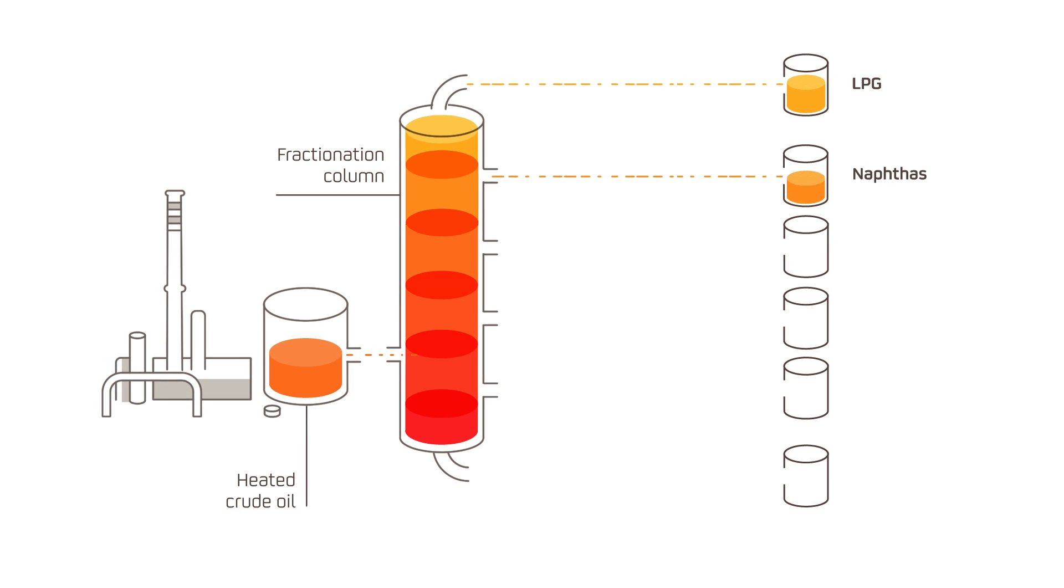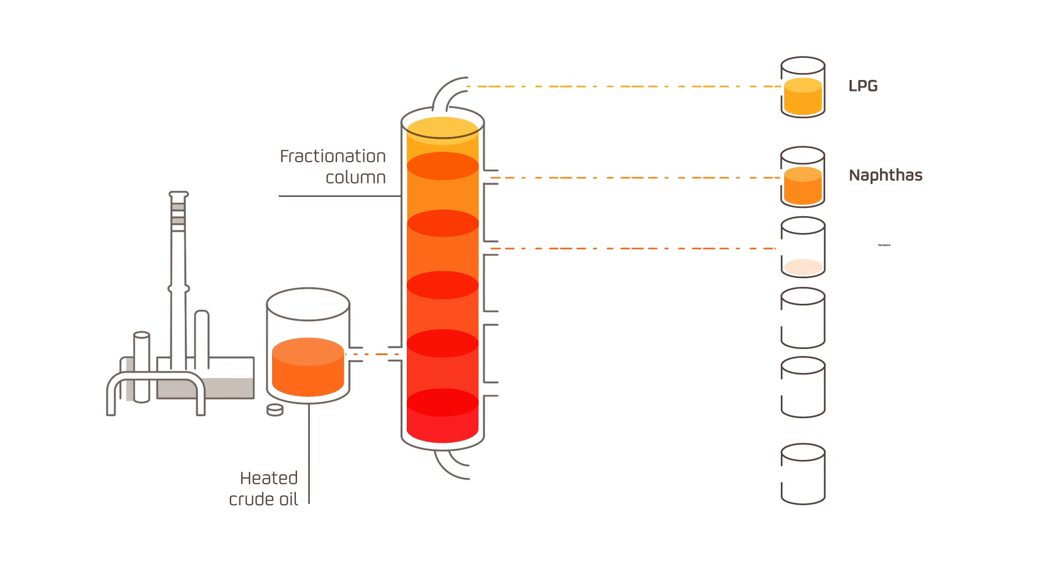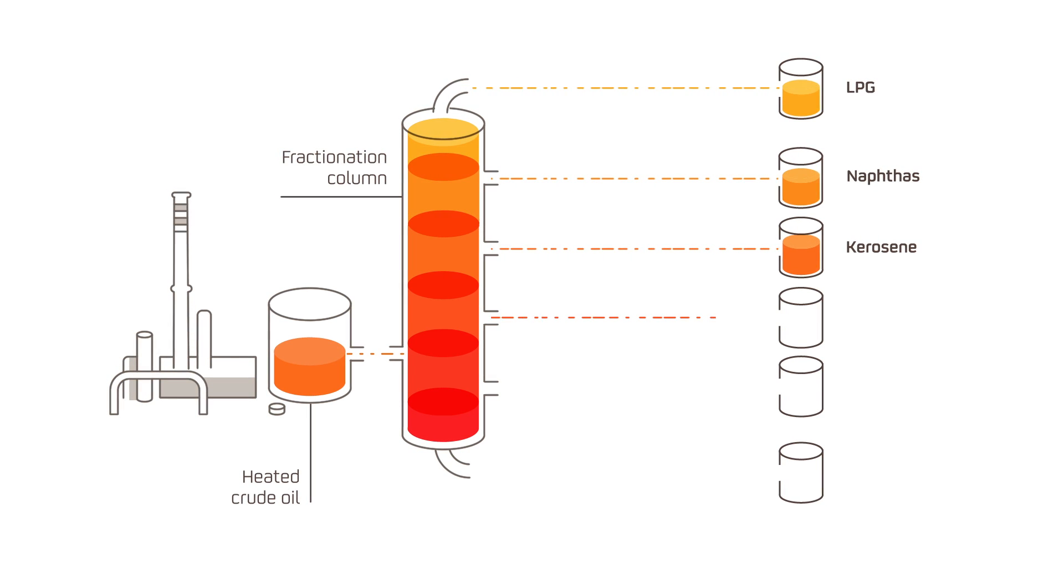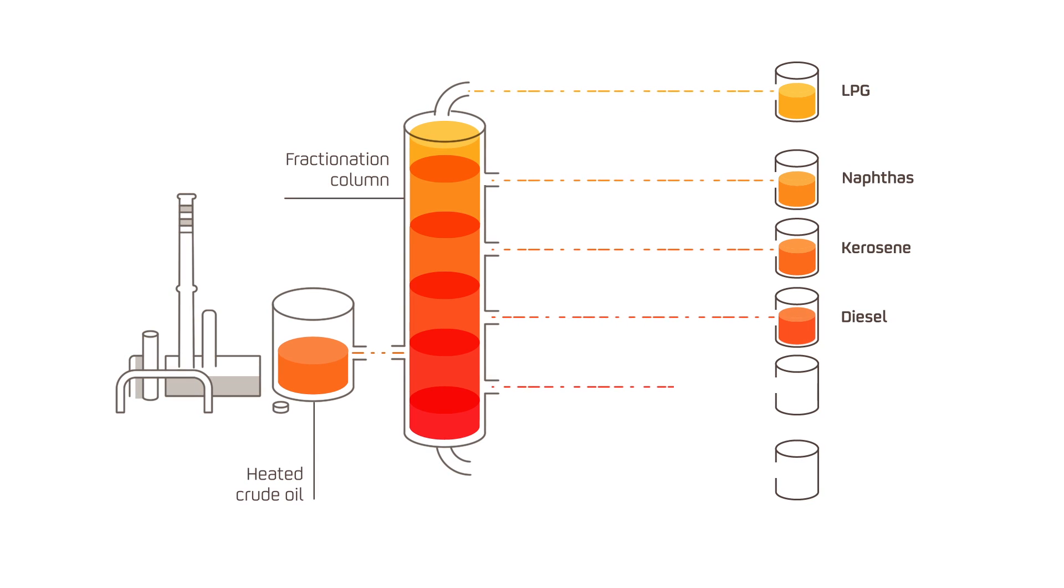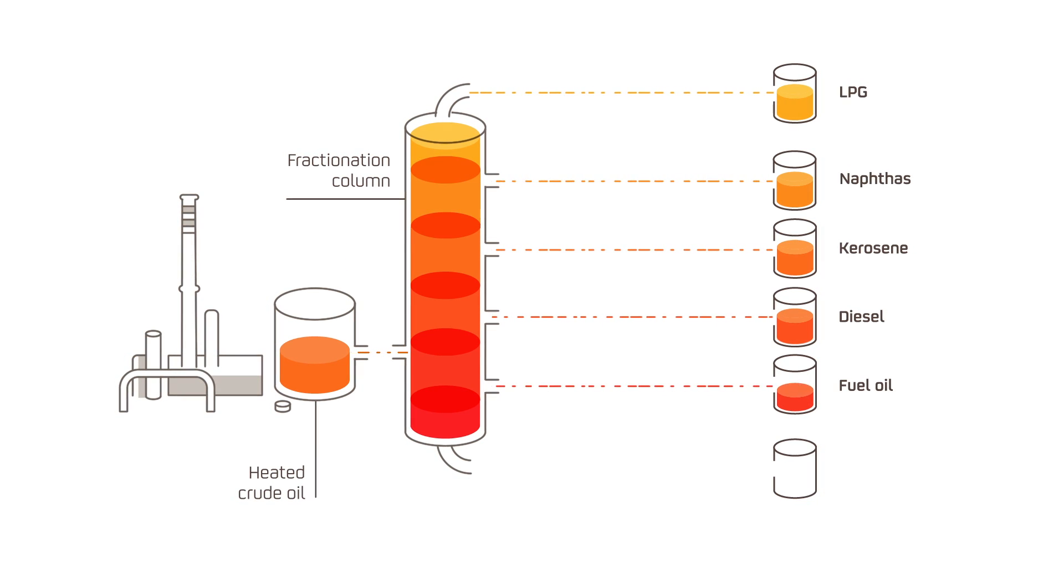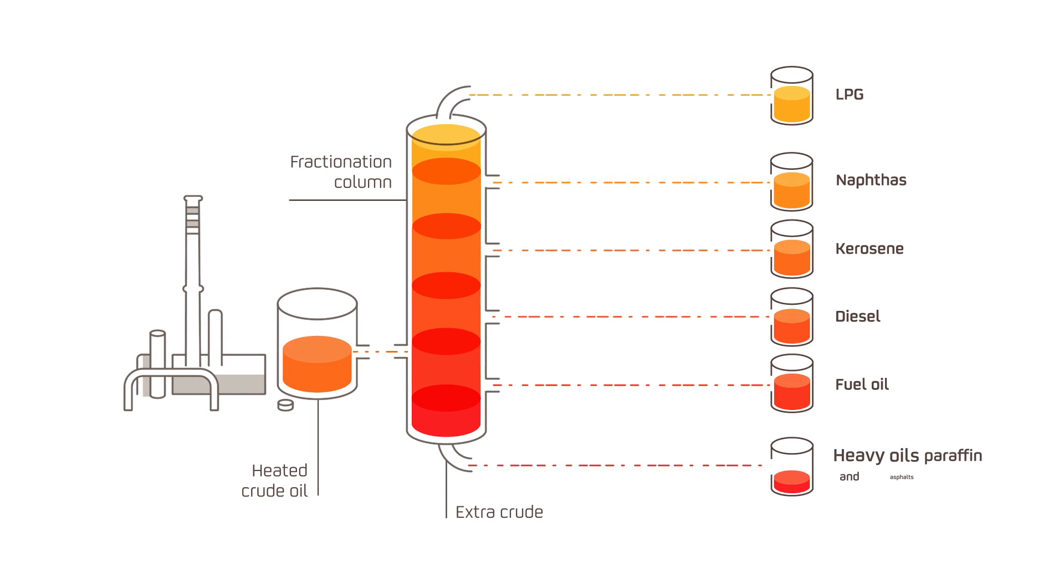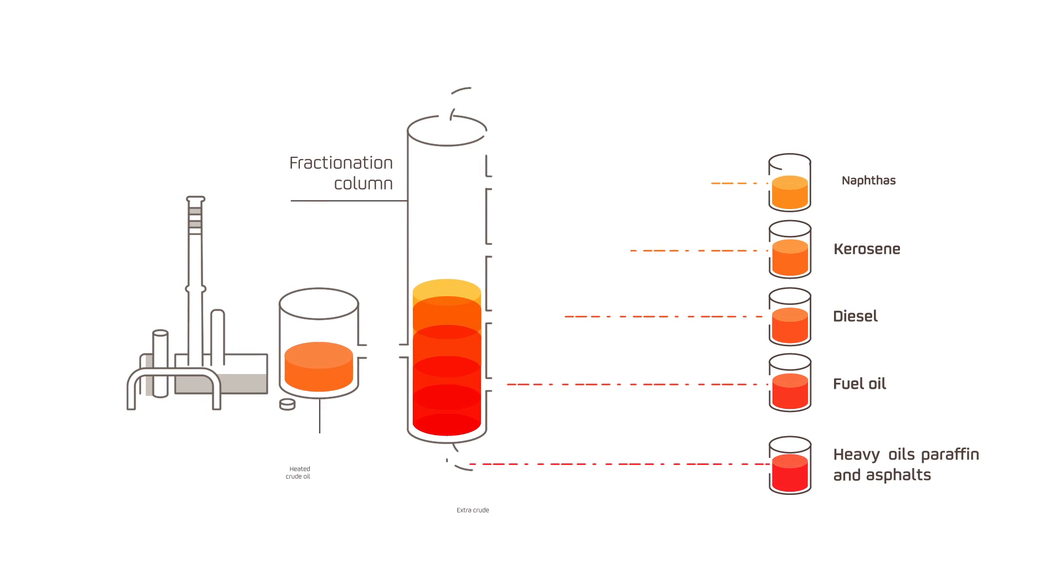Naphthas, which are the basis for gasolines and petrochemical products, kerosene for aircraft fuel, diesel for vehicles and home heating, fuel oils for boilers and power plants, and extra crude oil which is used to pave roads among other uses.